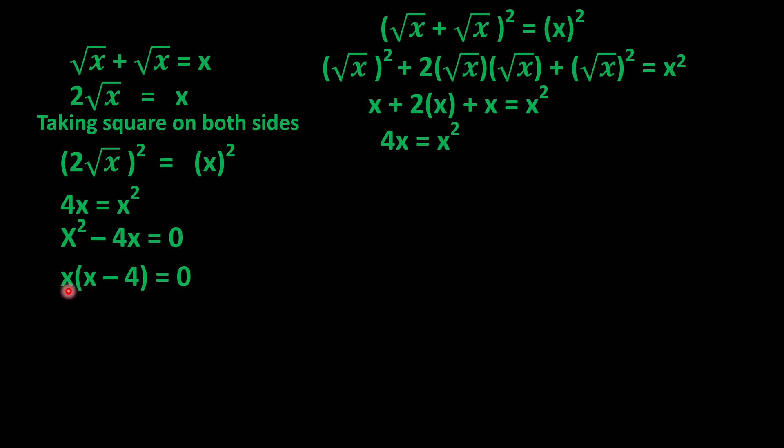Now we will compare: x = 0 and x - 4 = 0. Sending -4 to the other side gives x = 4. So x = 0 and x = 4 are the solutions of this equation.